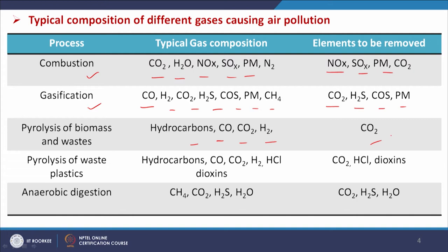Pyrolysis of waste plastics also gives us different gases that contain hydrocarbons, carbon monoxide, carbon dioxide, hydrogen, HCl, and dioxins. Dioxin is very very toxic and we need to remove carbon dioxide, HCl, and dioxins from these gas streams. Anaerobic digestion produces gas containing methane, carbon dioxide, H2S, and H2O (moisture or vapor), and removal of CO2, H2S, and H2O is very important.